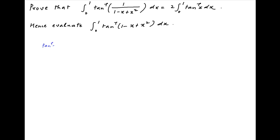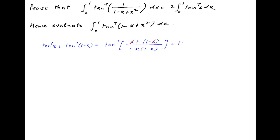We start by recalling that tan inverse a plus tan inverse b is equal to tan inverse of (a plus b) upon (1 minus ab). Therefore, tan inverse x plus tan inverse (1 minus x) is equal to tan inverse of (x plus 1 minus x) divided by (1 minus x times 1 minus x), which simplifies to tan inverse of 1 upon (1 minus x plus x squared).